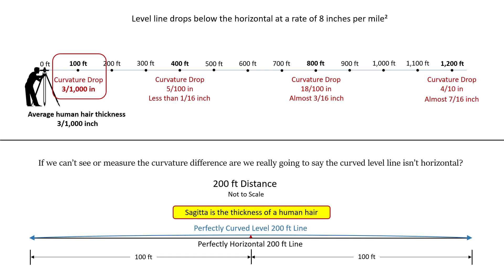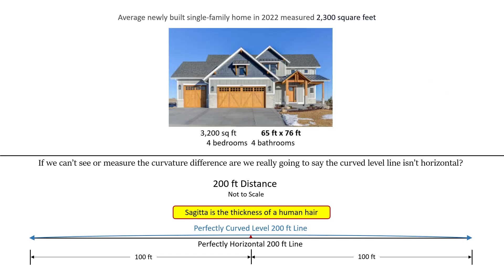So for a 200-foot distance, the sagitta is also the thickness of a human hair. Now if we can't see or measure the curvature difference, are we really going to say the curved level line isn't horizontal? Most do-it-yourselfers will never be involved with a project up to 200 feet in distance, and this also applies to home builders. In the example above there's a 3,200 square foot house with a footprint of 65 by 76 feet. So for most people who ever use a tool to level something, it will always be at a distance where you cannot see the difference between a level and horizontal line.